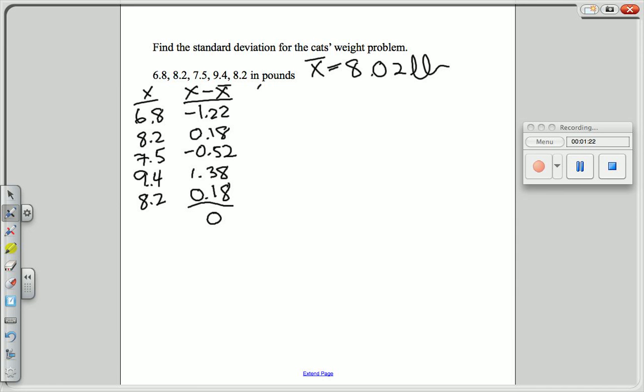Now we're going to take each of those x minus x bar values and square them to get rid of the negative signs. Don't forget when you square a negative number it becomes positive. The calculator won't show you that because of order of operations, so just make sure you always put positive numbers here.